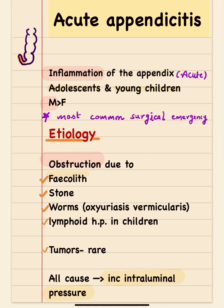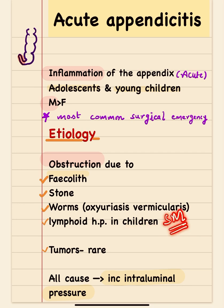The obstruction can be due to a fecolith obstructing the lumen of the appendix, or a stone. Pinworm — also known as Oxyuris vermicularis or Enterobius vermicularis — can cause obstruction in the appendix. Lymphoid hyperplasia can sometimes be seen in children, as lymphoid follicles in the submucosa can become hyperplastic due to viral infections, causing luminal obstruction. Rarely, tumors can also cause obstruction.